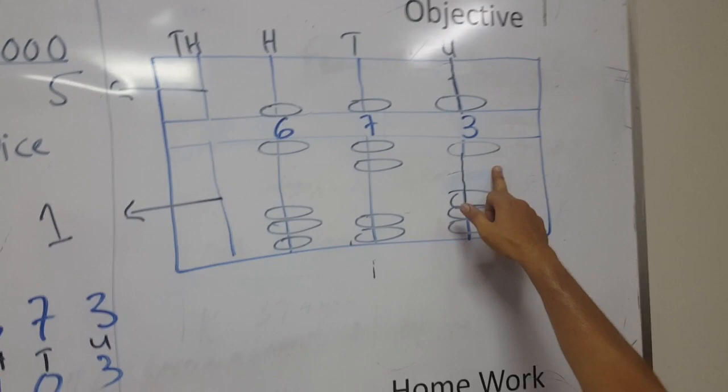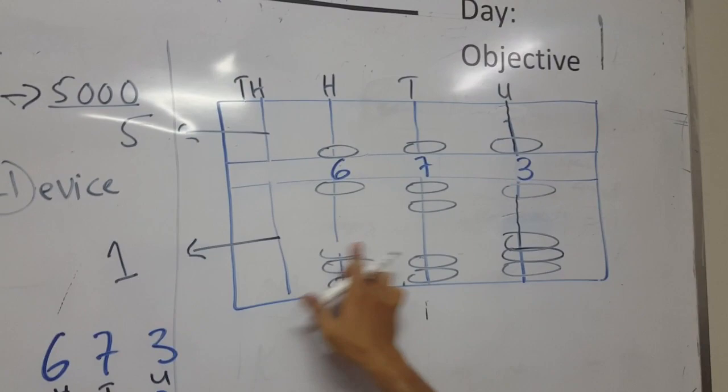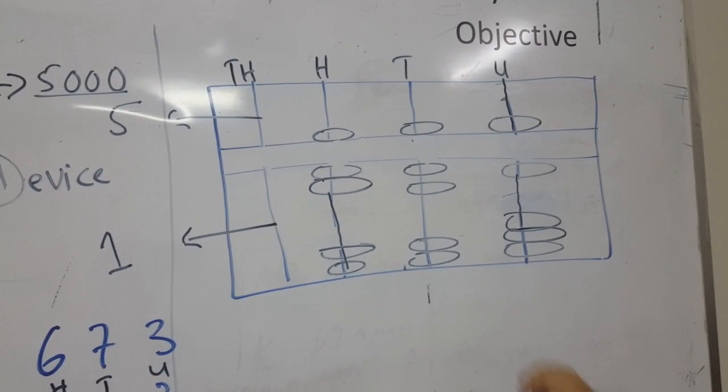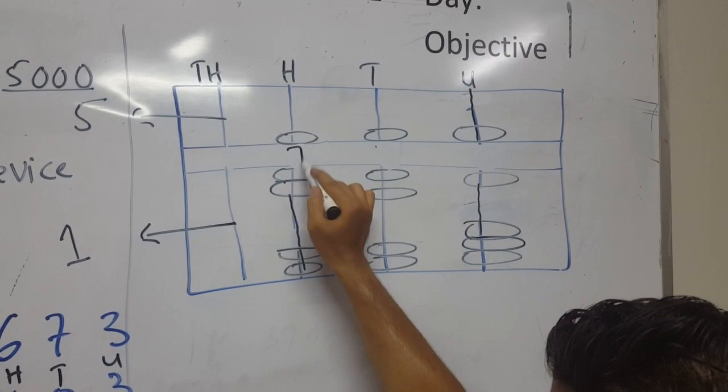This is done. Now the second part is zero, meaning no effect on the tens place. Third part is one and it is of hundred. So I need to use one more, meaning I'll move this bead up as well.